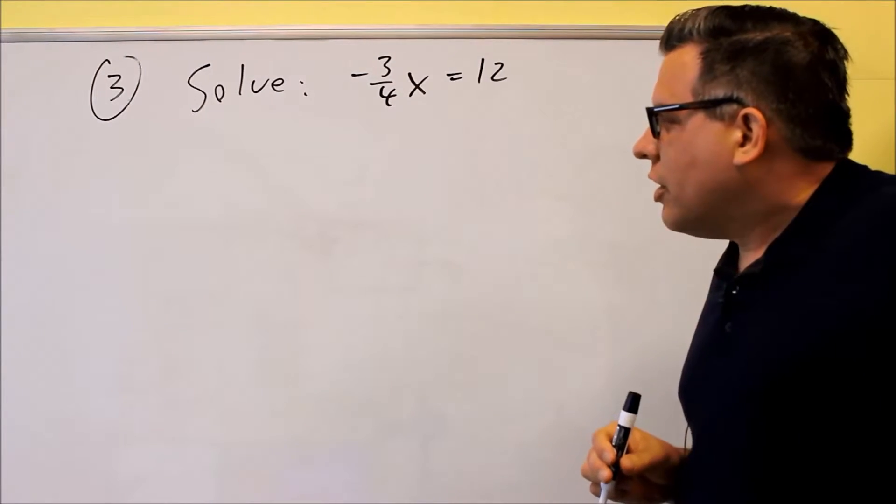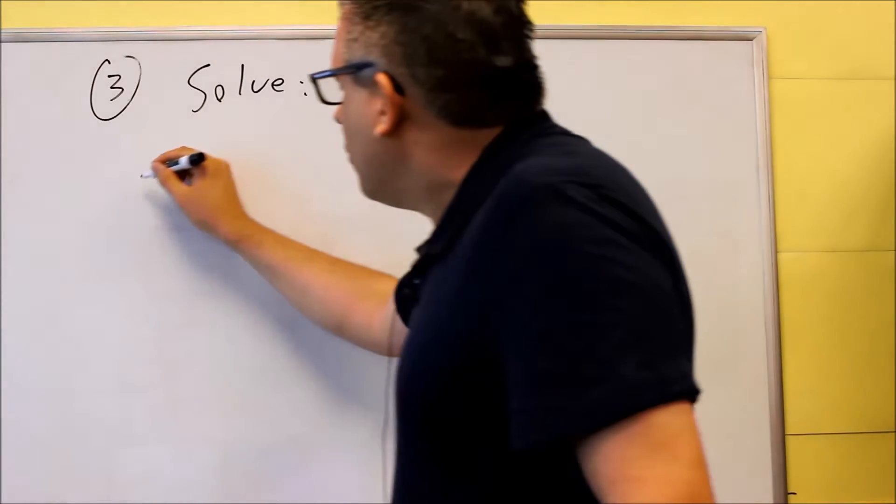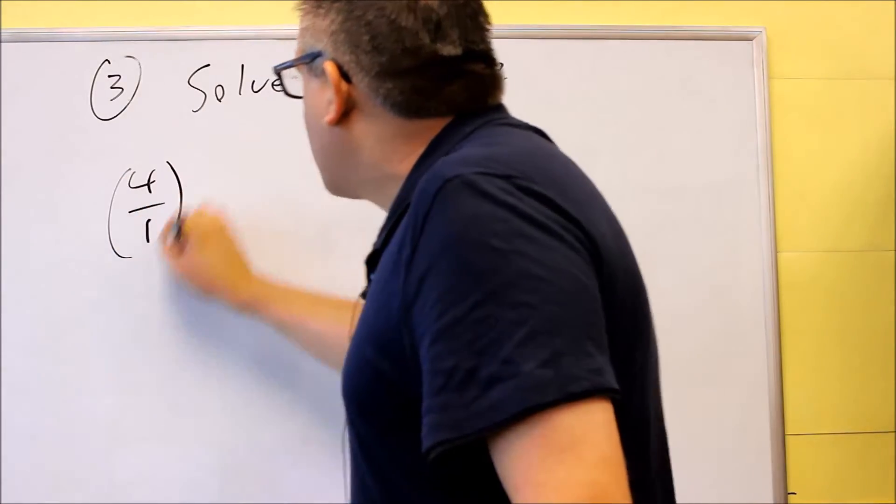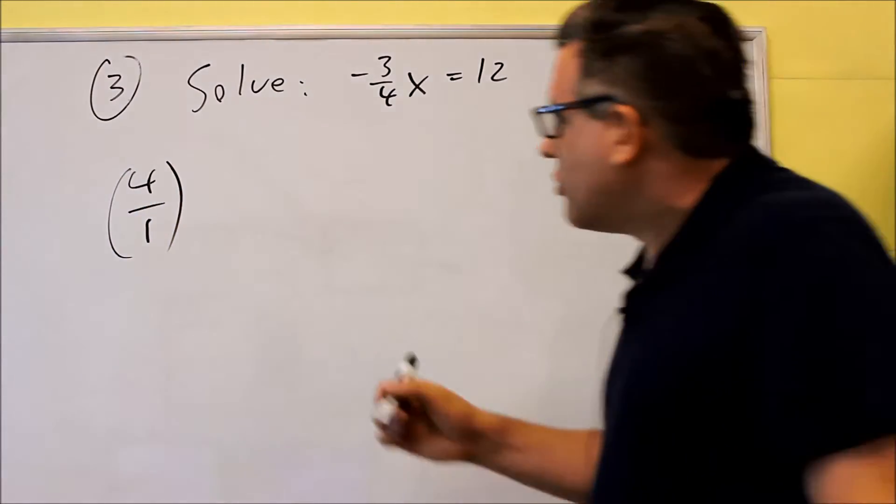So the common denominator here is 4. So what I'm going to do is multiply both sides of the equation by 4, just like I did in the first example.